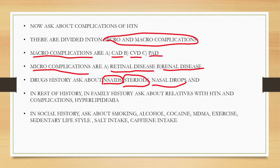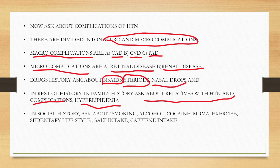In the rest of the history, we will ask about family history — particularly family members having hypertension and its complications — and we will also ask about hyperlipidemia.